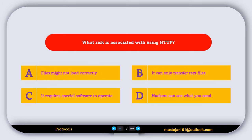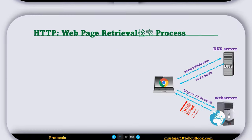What risk is associated with HTTP? Option A, files might not load correctly. Option B, it can only transfer text files. Option C, it requires special software to operate. Option D, a hacker can see what you sent. The correct answer is Option D — a hacker can see what you sent because HTTP does not encrypt the data.